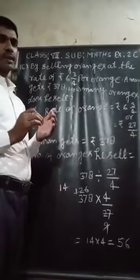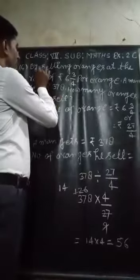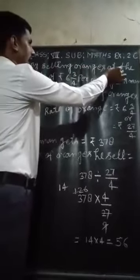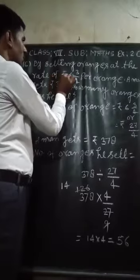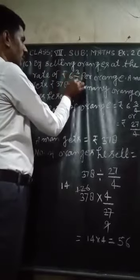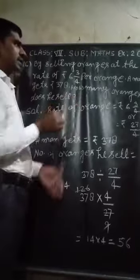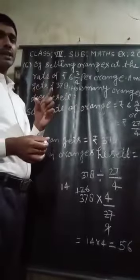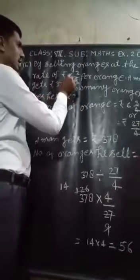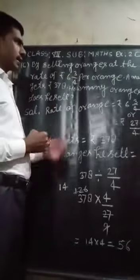So question number 6 is, by selling oranges at the rate of Rs. 6 whole 3 upon 4 per orange. That means, rate of 1 orange will be Rs. 6 whole 3 upon 4.